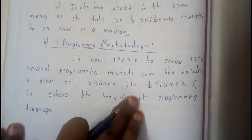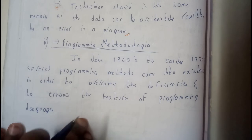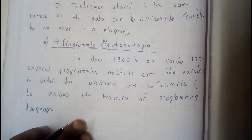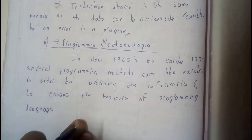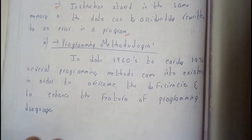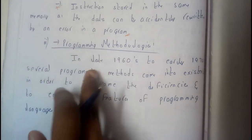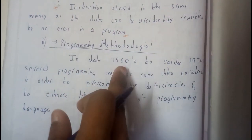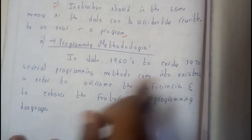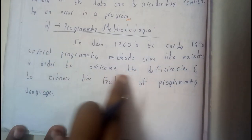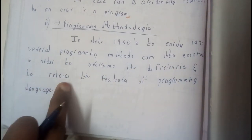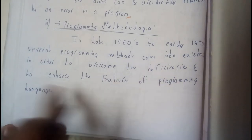In the late 1960s and early 1970s, programming methodologies came into play. Several programming methodologies came into existence in order to overcome deficiencies and to enhance the features of programming languages and increase their abilities.